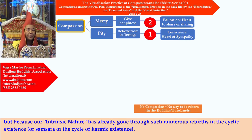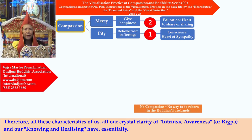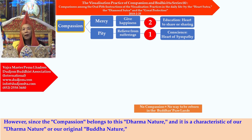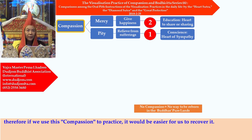But because our intrinsic nature has already gone through such numerous rebirths in cyclic existence — samsara — all our crystal clarity of intrinsic awareness, or rigpa, and our knowing and realizing have essentially been contaminated by these rebirths, and therefore have been blocked out, making them unable to be revealed. However, since compassion belongs to this dharma nature and is a characteristic of our original Buddha nature, if we use compassion to practice, it would be easier for us to recover it.